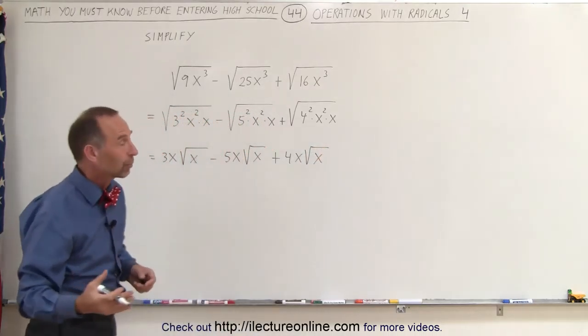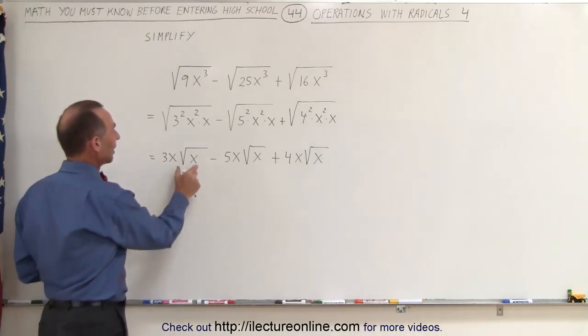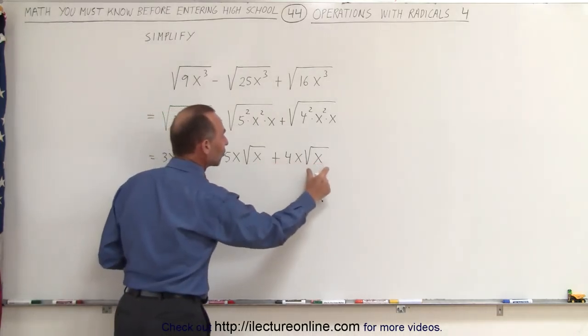Again, whenever you have the square root of something squared, you simply take it outside the radical. Now you can see that each radical is exactly the same as the square root of x.